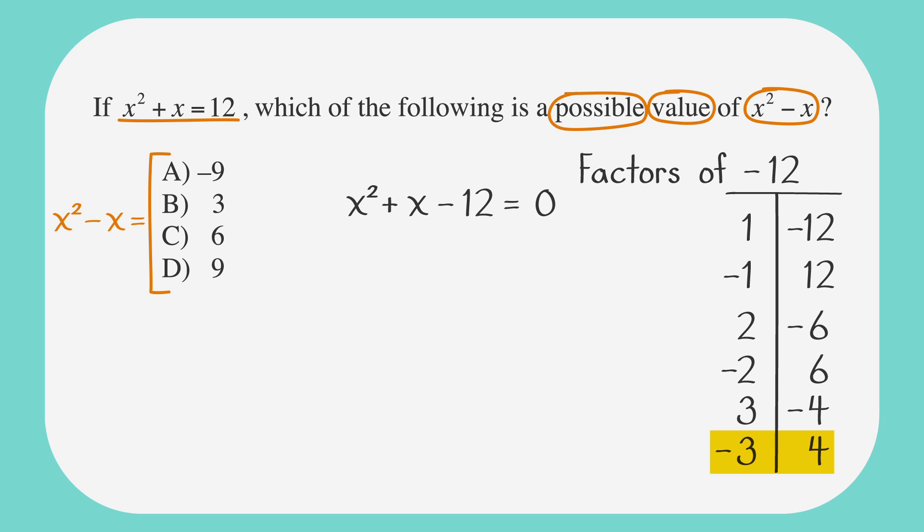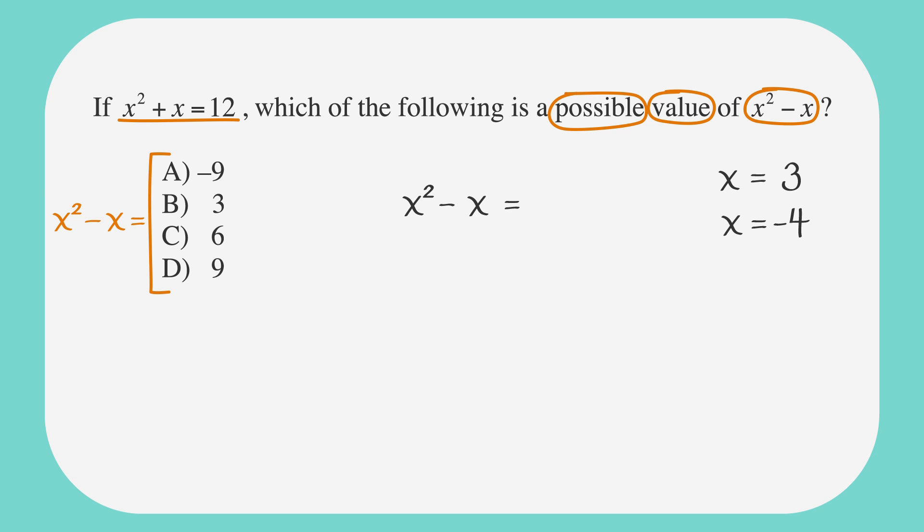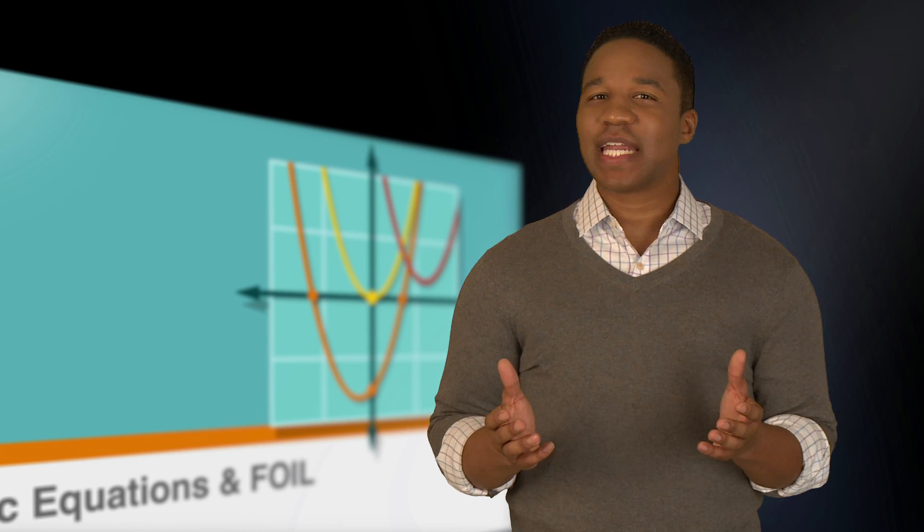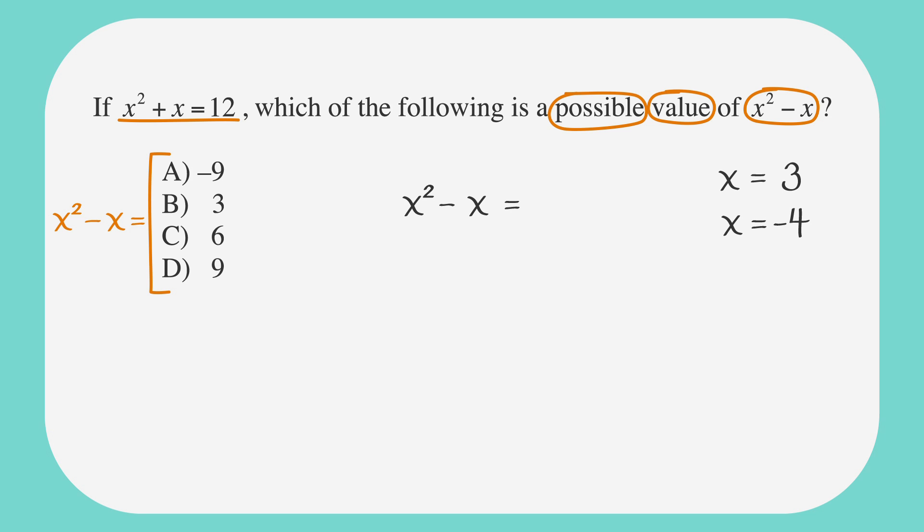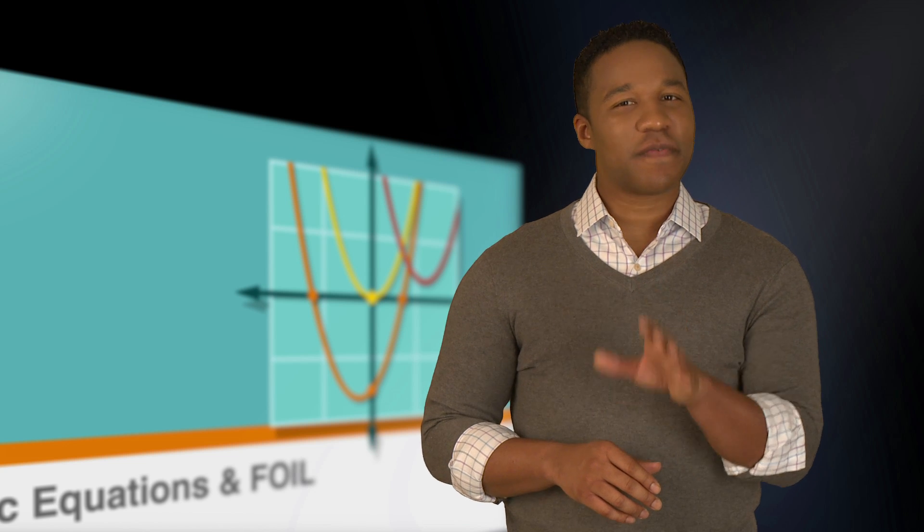To factor the quadratic, we need to look for what two numbers will multiply to negative 12 and add to 1. Negative 3 and 4 do this. Writing the expression in factored form, we get the quantity x minus 3 times the quantity x plus 4 equals 0. Since the product of x minus 3 and x plus 4 equals 0, then either x minus 3 equals 0 or x plus 4 equals 0. To solve x minus 3 equals 0, we add 3 to both sides to get x equals 3. In solving x plus 4 equals 0, we subtract 4 from both sides to find that x equals negative 4. Let's see which of these solutions for x can be found in the answer choices. If we try x equals negative 4, we see that the quantity negative 4 squared minus negative 4 equals 16 plus 4, which is 20, so none of our answer choices. But wait, we have another solution to try. Remember that x can be either negative 4 or 3. So let's try x equals 3. Then we get 3 squared minus 3, which is 6. So our answer is c.